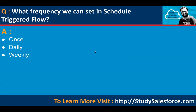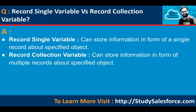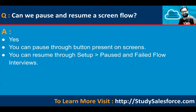What frequency can we set in schedule triggered flow? As of now, we have once, daily, and weekly. Difference between record single variable versus record collection variable: a record single variable stores information as a single record about a specific object, and a collection variable can store information in the form of multiple records about a specified object. Can we pause and resume a screen flow? Yes — you can pause through the button present on screen. To resume, go to setup and in quick find type 'Paused and Failed Flow Interviews' — there you can find paused interviews and resume them.